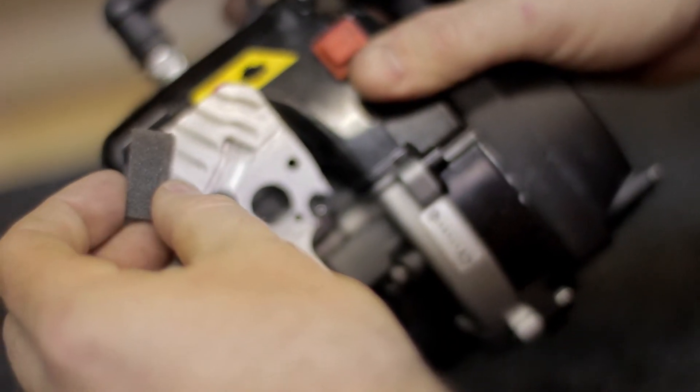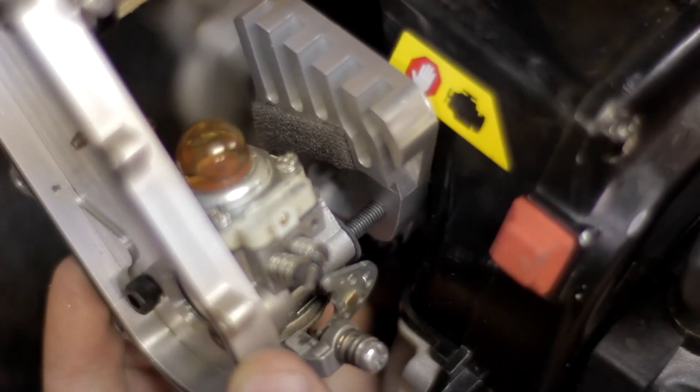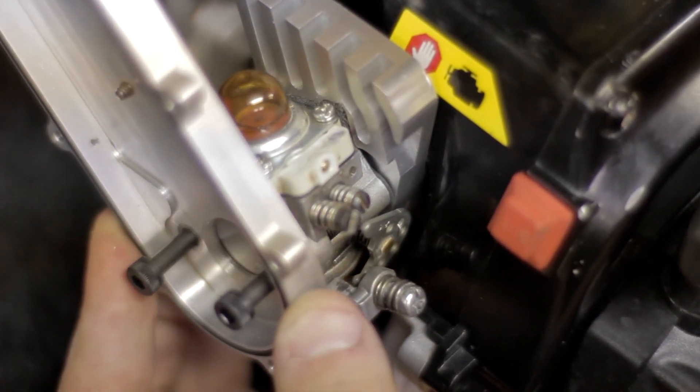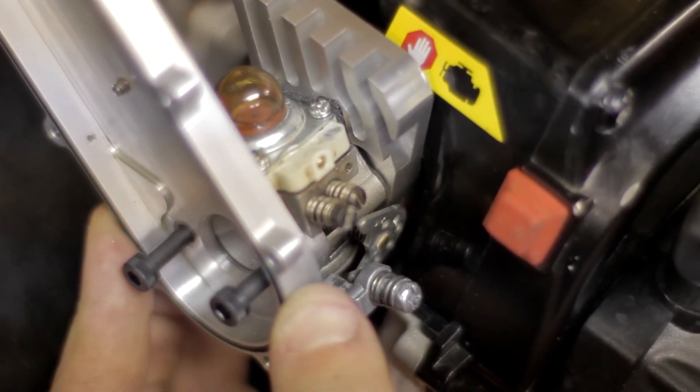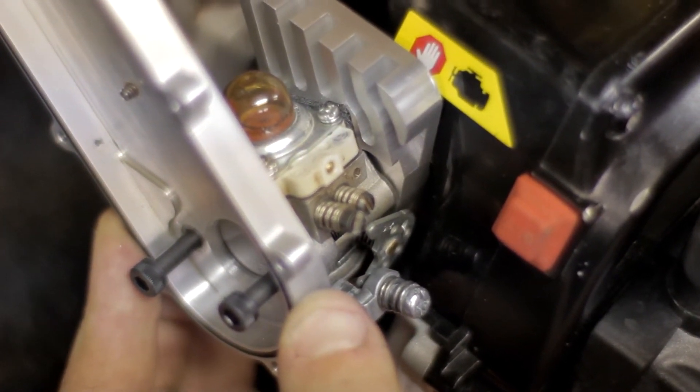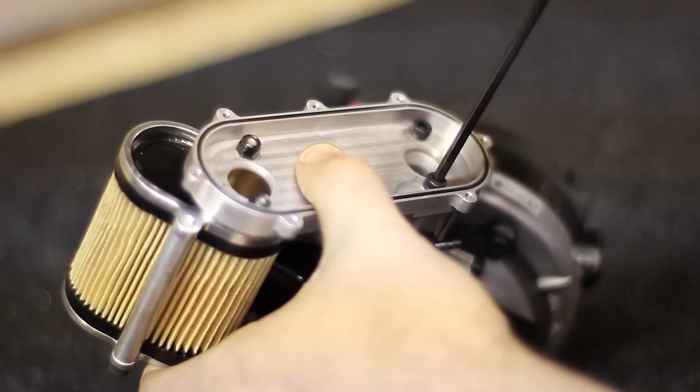Next, you want to drop in the diaphragm filter element. You want to drop your carburetor and air filter assembly onto the new isolator block. As you can see, it mates up perfectly with the diaphragm filter. Now, you want to tighten down those two bolts using Loctite.